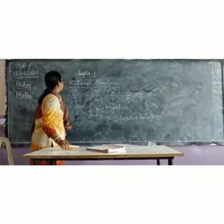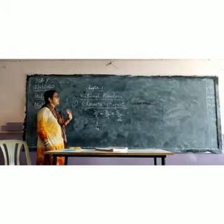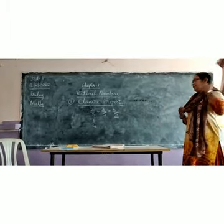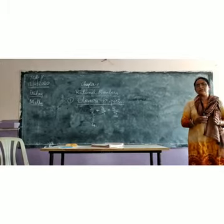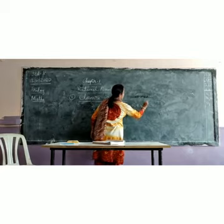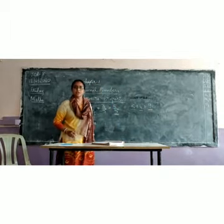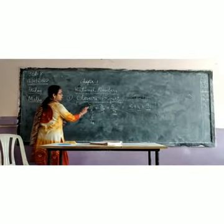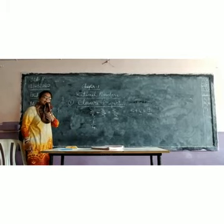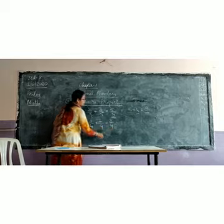Now we move on to the properties of rational numbers, starting with the closure property. If you recollect, for natural numbers the closure property says that when two natural numbers are added, we get a natural number as the answer. For example, 5 plus 4 equals 9 — 5 is a natural number, 4 is a natural number, and 9 is also a natural number. Same way for rational numbers: 2 upon 5 plus 3 upon 5 equals 5 upon 5, which is also a rational number. Another example: 1 upon 4 plus 2 upon 4 equals 3 upon 4, which is also a rational number.